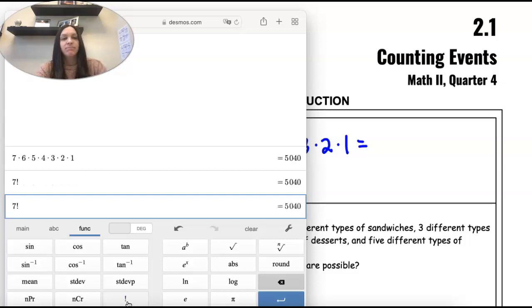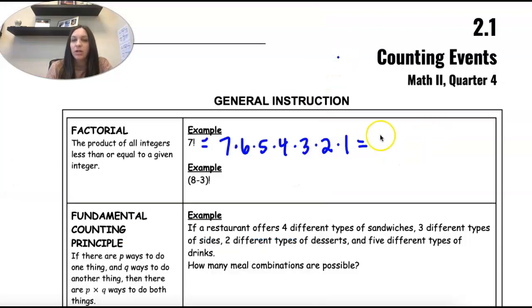Or you can just type it as an exclamation point. And it knows, in math, it's a factorial. So the answer, any of those ways, is 5,040. Okay?